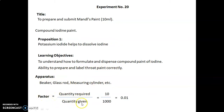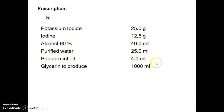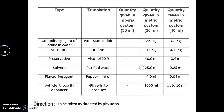Factor calculated: quantity required upon quantity given = 10 upon 1000 = 0.01. The prescription is as follows — Rx: Potassium iodide 25 g, Iodine 12.5 g, Alcohol 90% 40 ml, Purified water 25 ml, Peppermint oil 4 ml, Glycerin to produce up to 1000 ml. Now let's discuss the formulation table in detail.